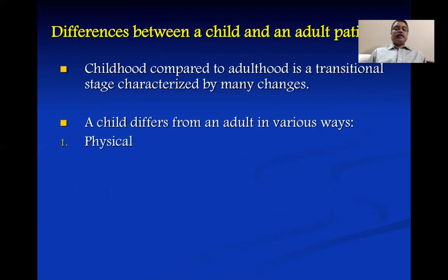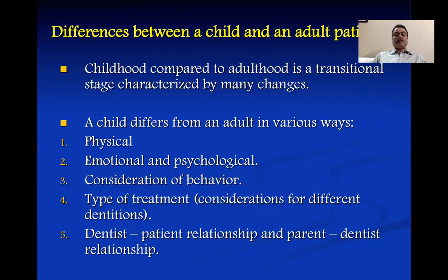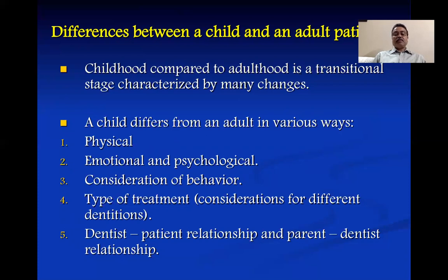A child is not a miniature adult. There are various differences between a child and an adult patient. Childhood, compared to adulthood, is a transitional stage characterized by many changes. A child differs from an adult in physical changes, emotional and psychological differences, behavior exhibited as they grow from infancy to adolescence, treatment considerations across primary, mixed, and young permanent dentition, and most importantly the dentist-patient and parent-dentist relationship that must be managed.